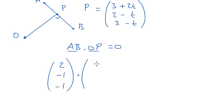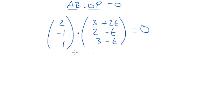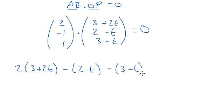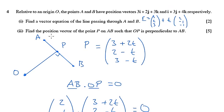So if we go ahead and work that out, 2 lots of 3 plus 2T, minus 1 lot of 2 minus T, and minus 3 minus T needs to be 0. So if we expand all the brackets, we can collect the T's together, and therefore then work out P's coordinate, which I'm sure is what it asks for.